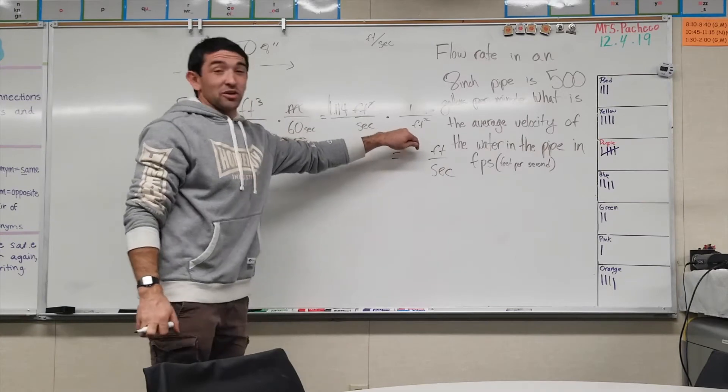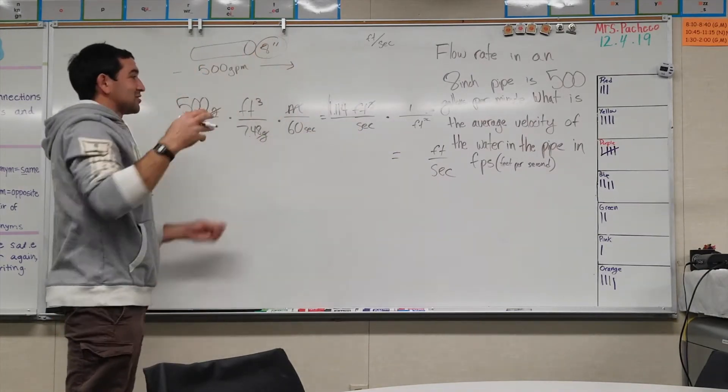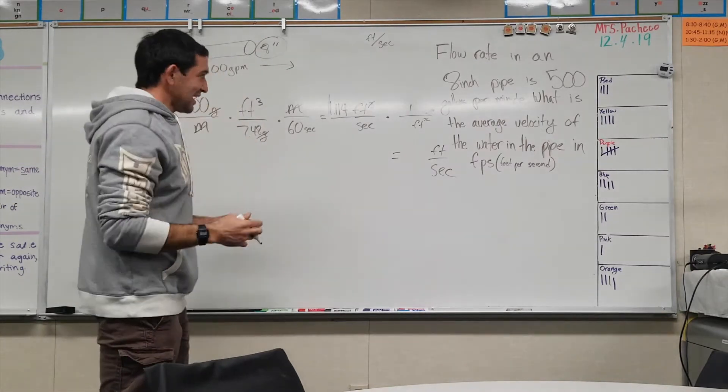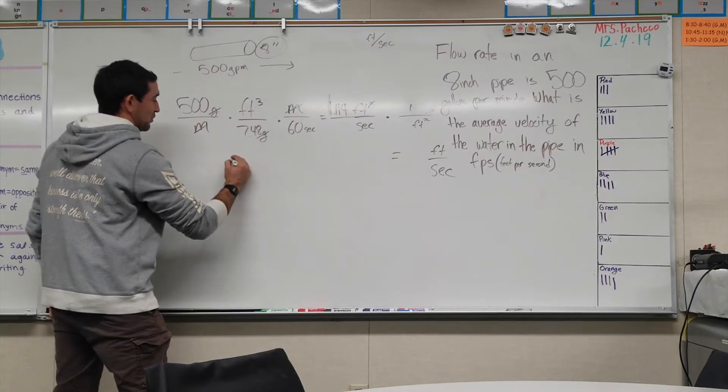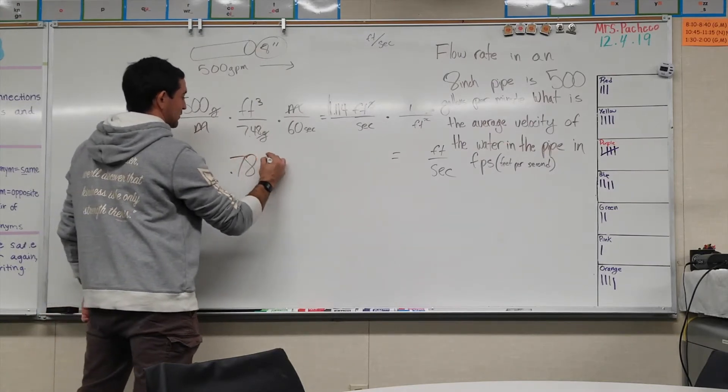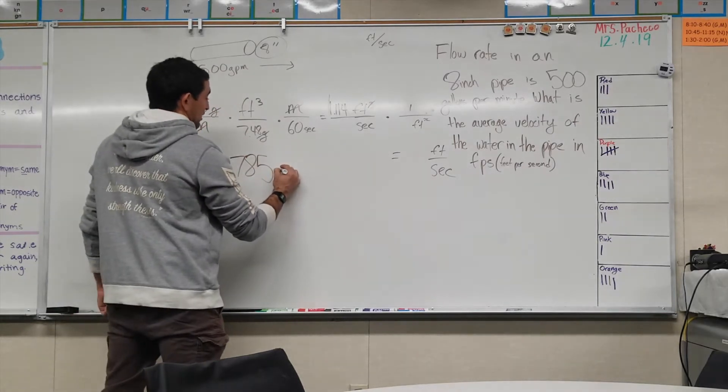Where can we get a square foot value? We get it right here. We know that the diameter of the pipe is eight inches, and so if you want to find the surface area of a pipe you do that 0.785 number that we learned about in the first video.